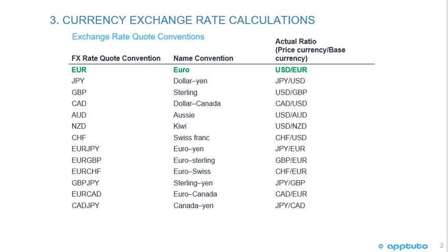If we're looking at the euro, I highlight that in green. The name convention is the euro, and the actual ratio in terms of the price currency and the base currency, the US dollar is the price currency and the euro is the base currency. So one euro will buy you how much US dollars.